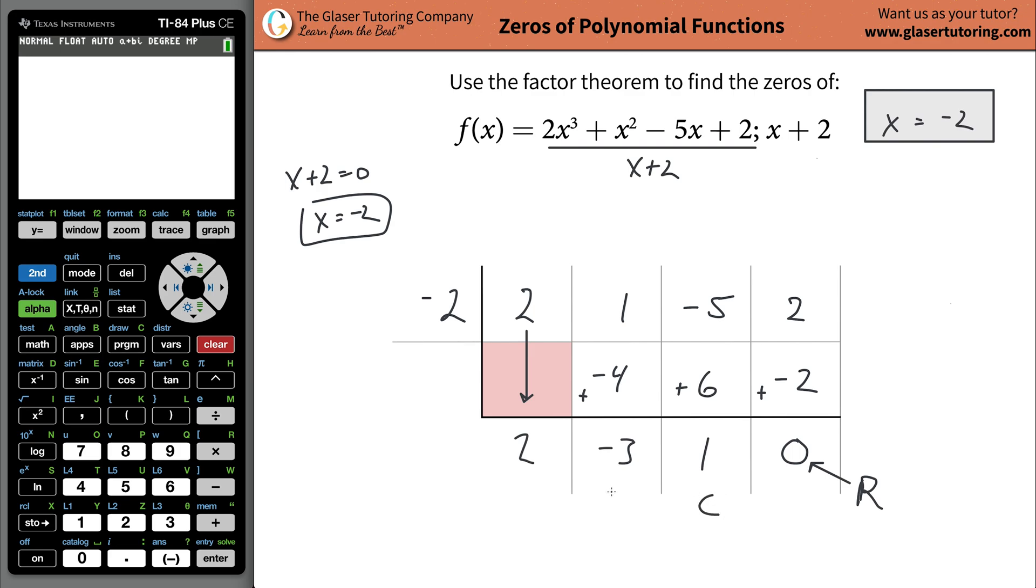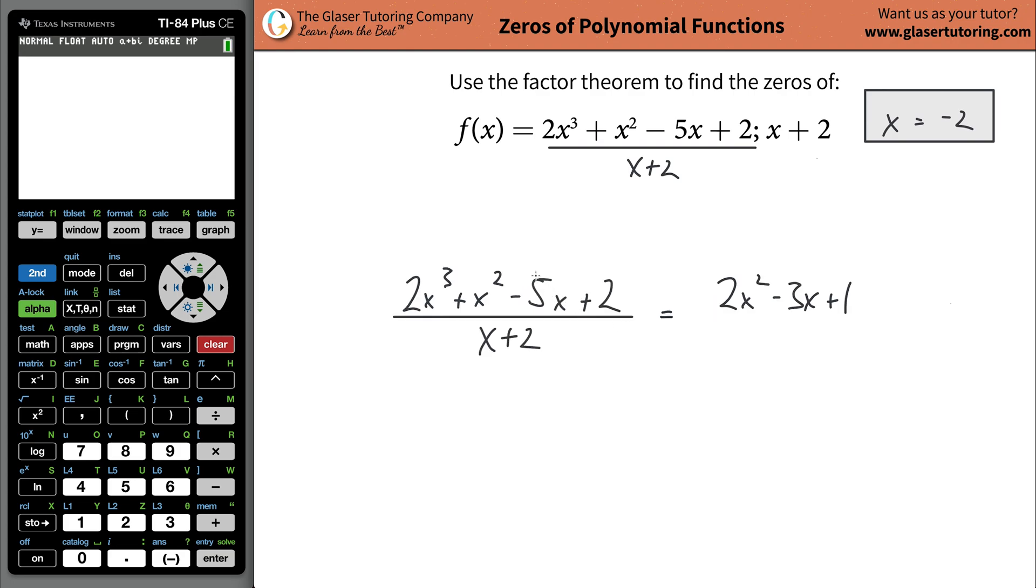Now keep in mind what these values at the bottom represent. This value all the way on the right represents the remainder. This will represent your constant term. This will represent then your x term. And then this will represent your x squared term. So what I'm saying is that when you take this function and you divide it by this, you will get this as a result. In other words, you will get 2x squared minus 3x plus 1. And here it is. When we took this function, divided it by this, we got this as then the result.